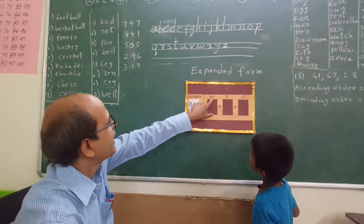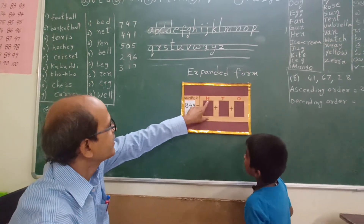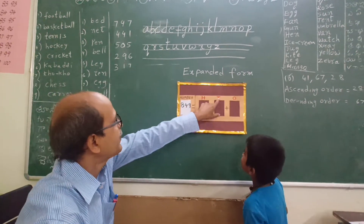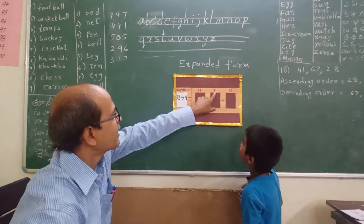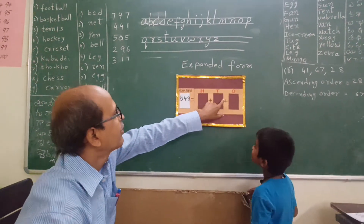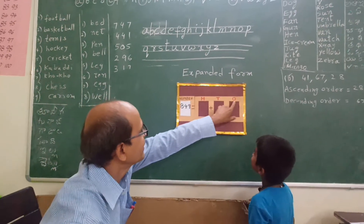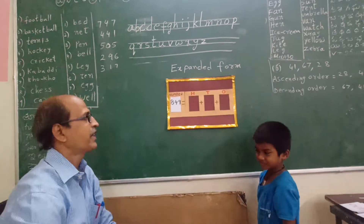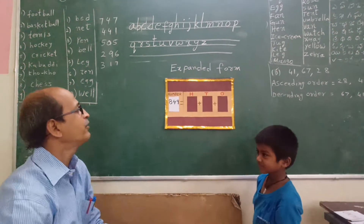What is the place value of this box? 100. What is the place value of this box? 100. Okay. What is the place value of this box? 100. Okay, very good.